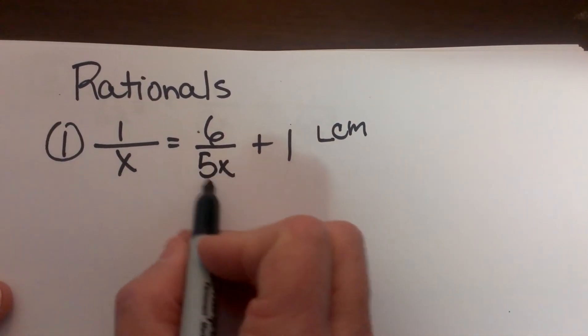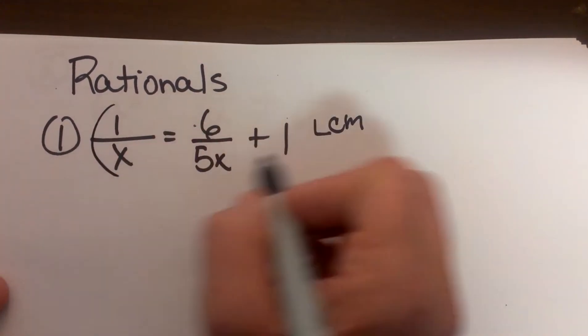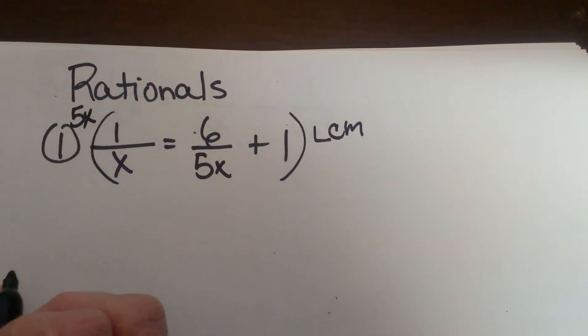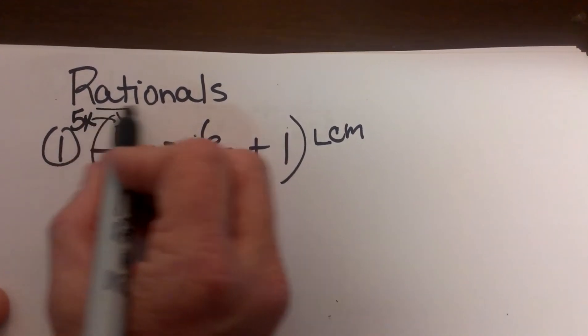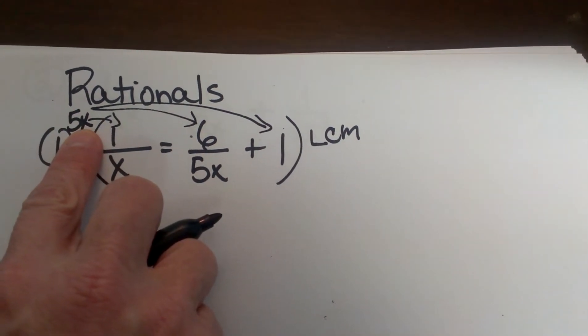Well I have an x and I have a 5x so that would be a 5 and an x. So I have to multiply through by 5x and when I do that I multiply every single term even this constant way out here by that common denominator.